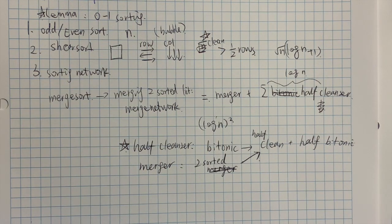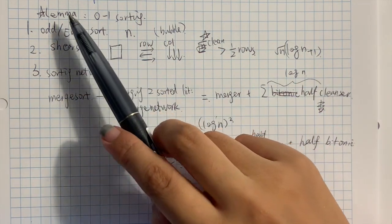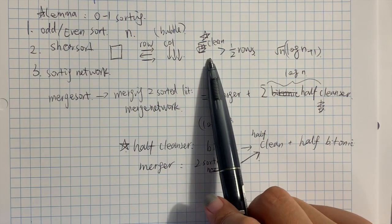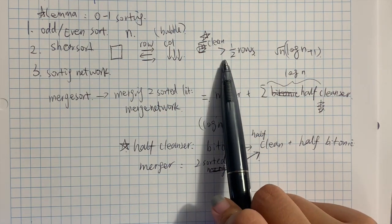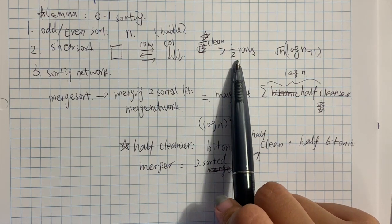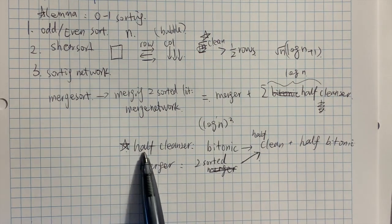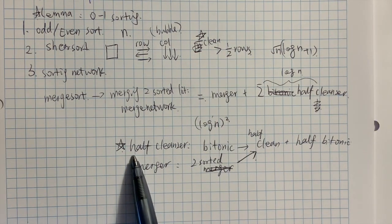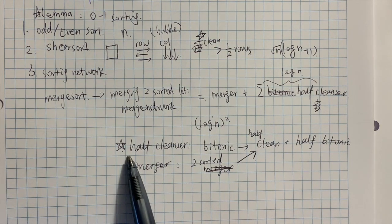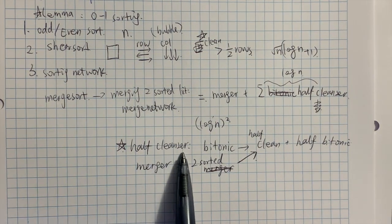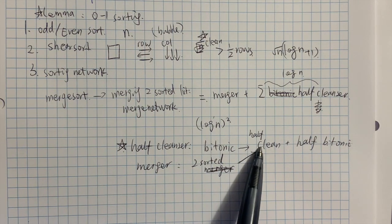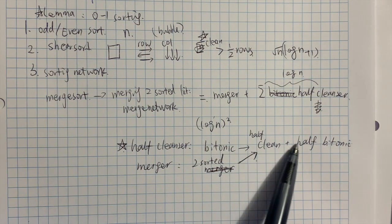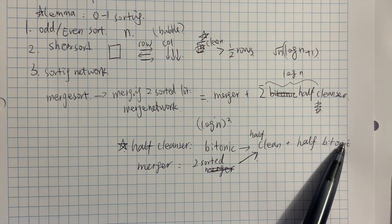Three important takeaways: first, we have the zero-one lemma. Second, we can prove that the number of clean rows will be at least half of the rows. And third, we learned a very interesting mechanism called the half cleanser — you take in a bitonic sequence and output a half-clean, half-bitonic sequence.